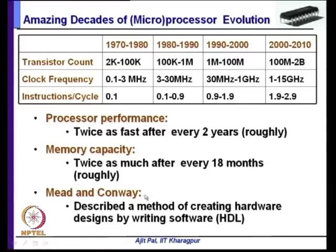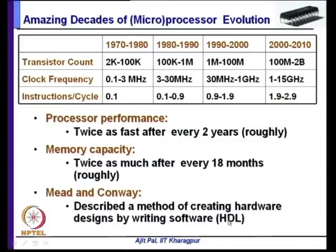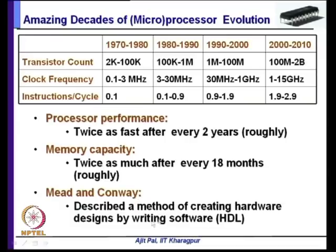Mead and Conway described a method of increasing hardware designs by writing software. Whenever the number of transistors in a processor increases, it is not possible to do the design manually — you require automated techniques. They proposed using hardware description languages and CAD tools to automate processor design, so that by writing software you can design hardware. This was an important step for creating processors with millions of transistors.